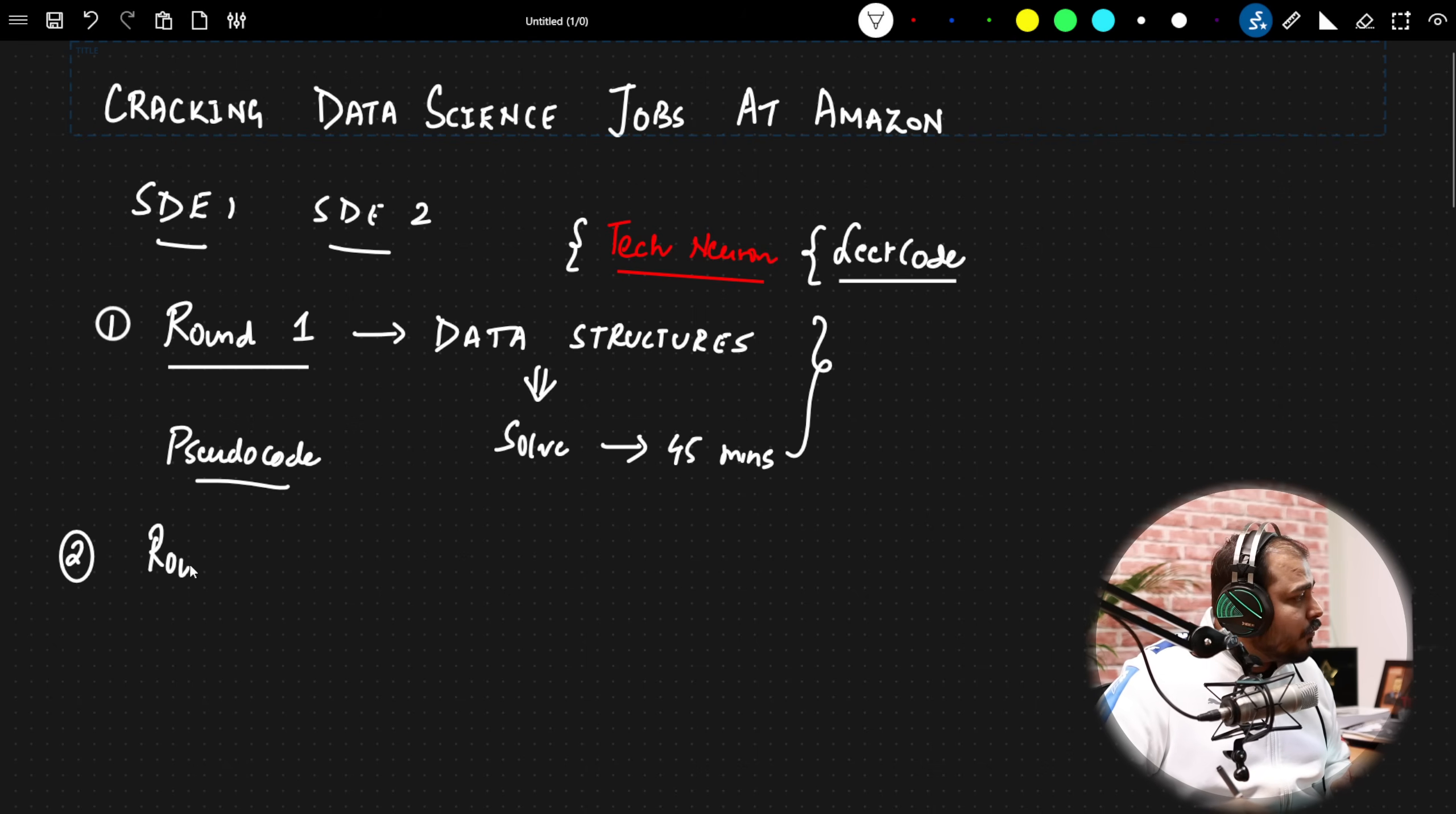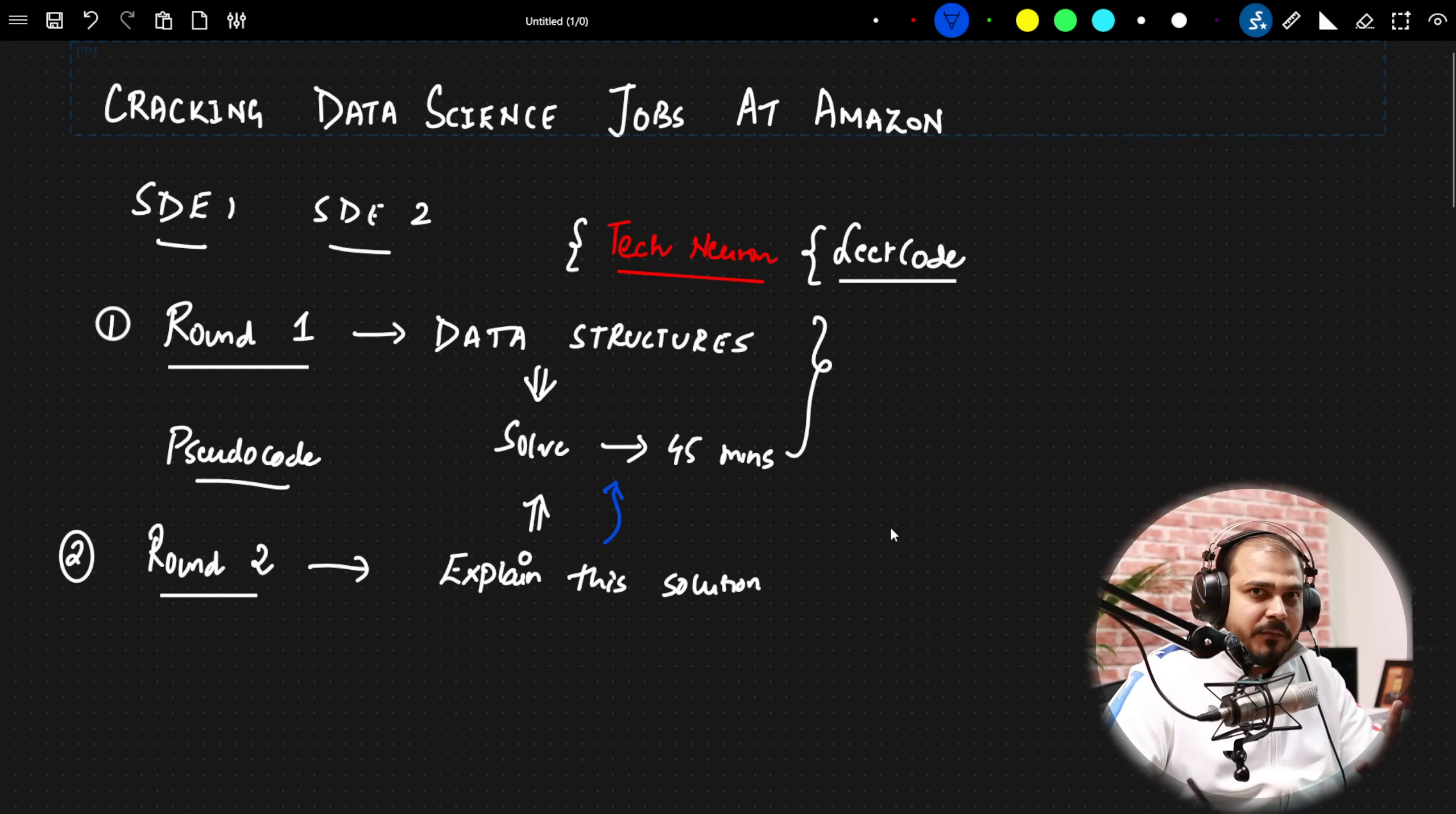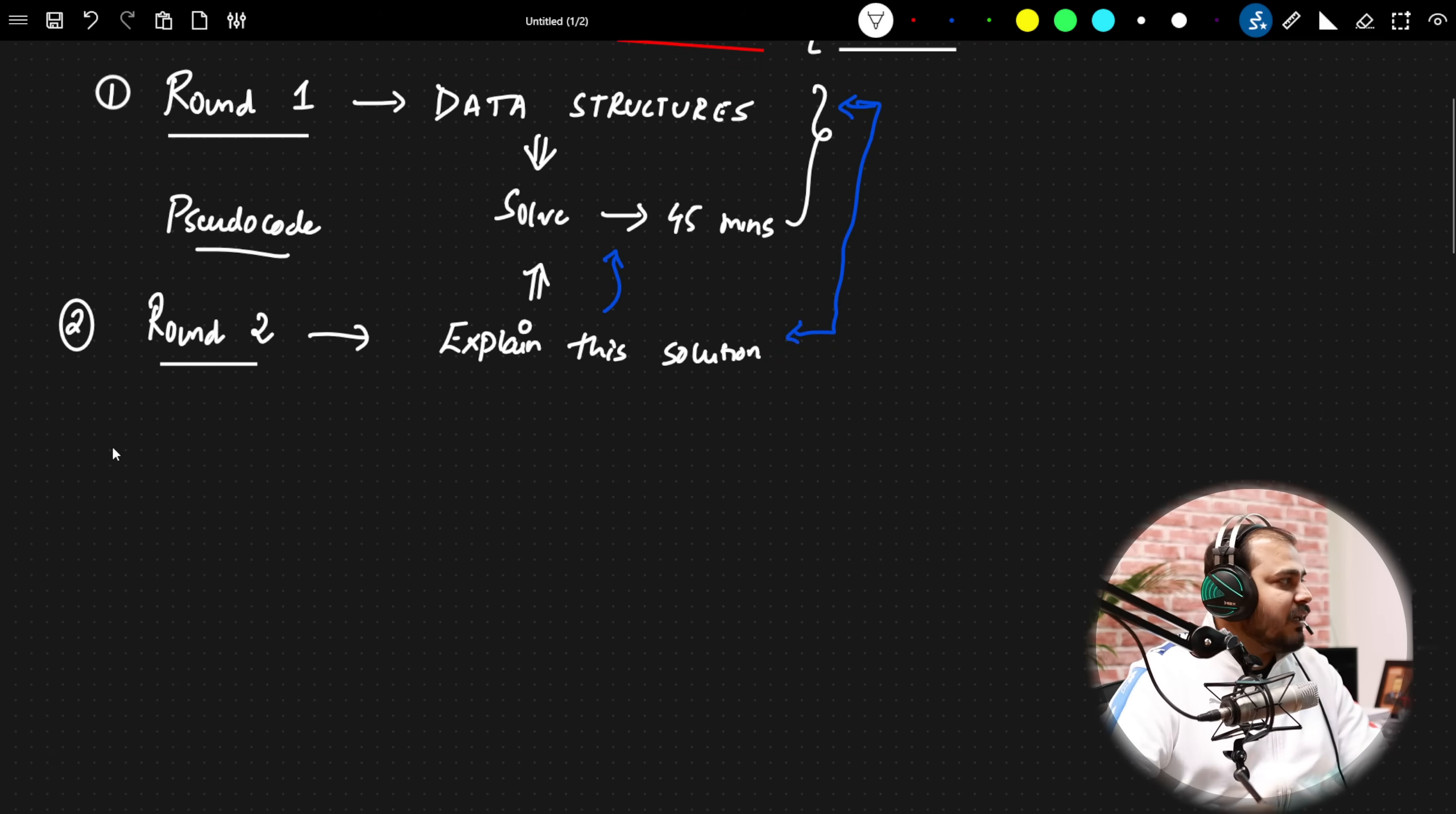In round two, he was just asked to explain this entire problem statement. Explain how did he basically solve this, explain the solution that he has come up for this. So if you are able to cover round one and round two, now with respect to a data scientist, your main interview related to data science will start from round three.